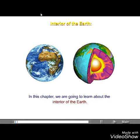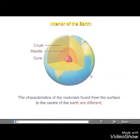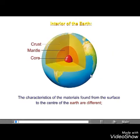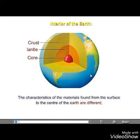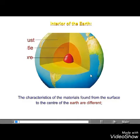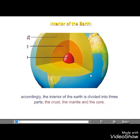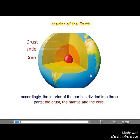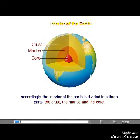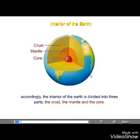We are going to learn about the interior of the earth. The characteristics of the materials found from the surface to the center of the earth are different. Accordingly, the interior of the earth is divided into three parts: the crust, the mantle, and the core.